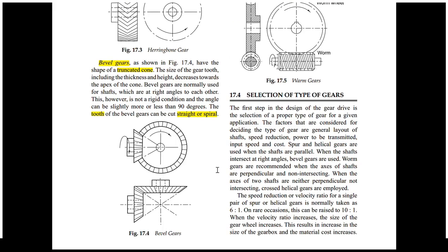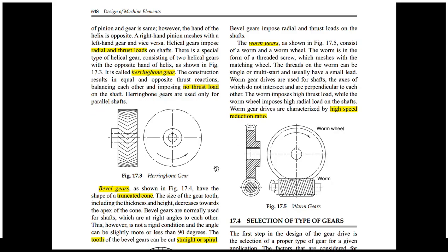In the bevel gear, the axes of the two shafts are inclined to each other, and the surfaces of the gears are in the shape of a truncated cone. The teeth on a bevel gear can be straight or helical. Worm gears are used for high speed reduction ratios. In worm gears, the axes of the shafts are neither intersecting nor parallel.